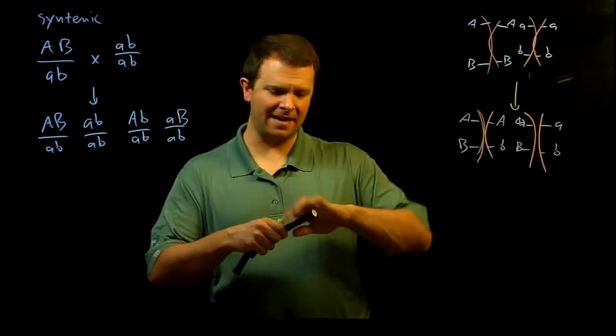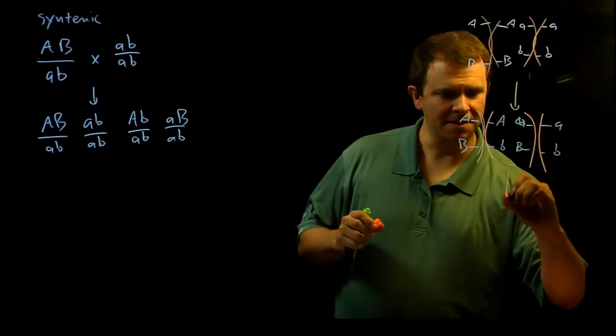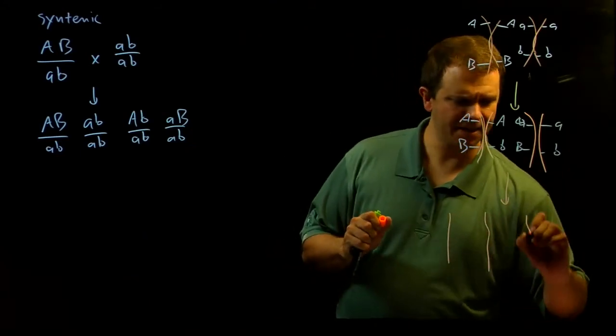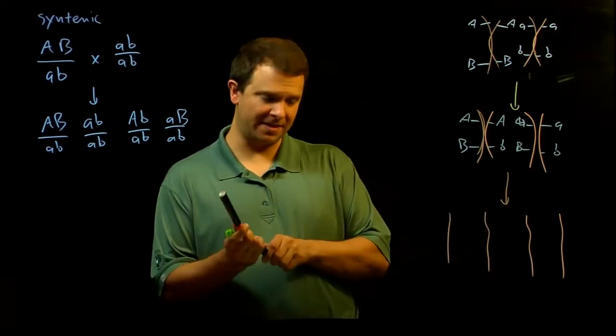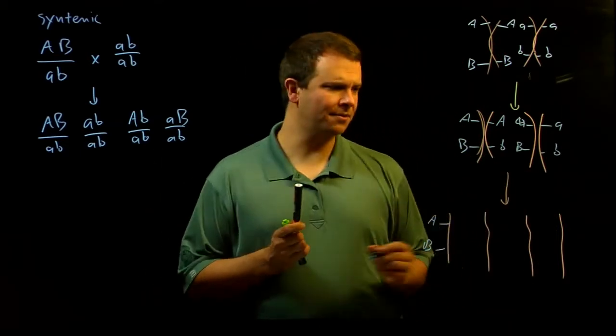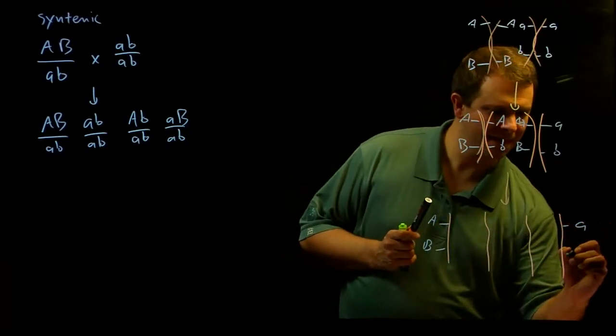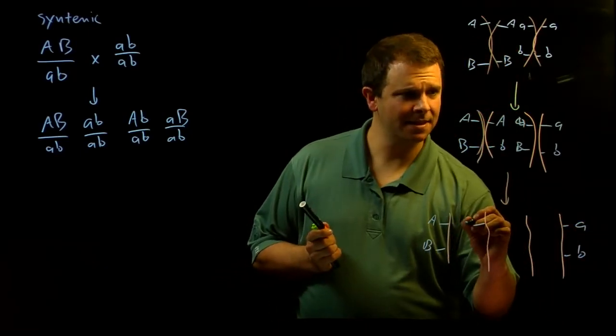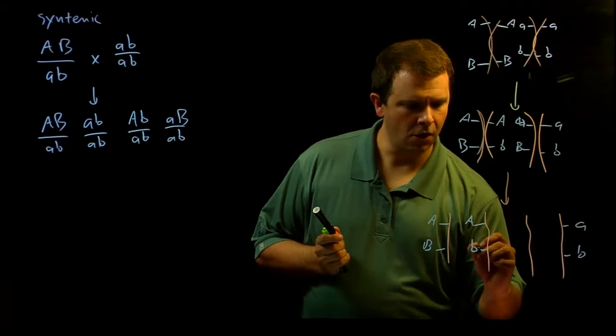And so remember then that as meiosis continues, you end up with four gametes that have these four chromatids in them. And this gamete is the parental type. This gamete is the parental type.